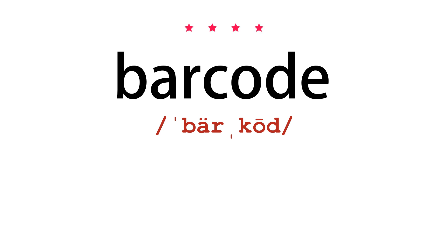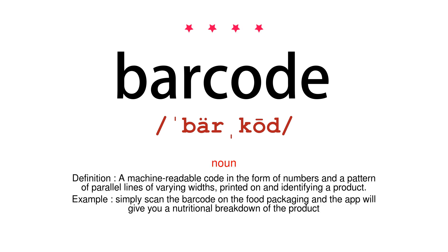Barcode. Noun. Definition: a machine-readable code in the form of numbers and a pattern of parallel lines of varying widths, printed on and identifying a product. Example: simply scan the barcode on the food packaging and the app will give you a nutritional breakdown of the product.